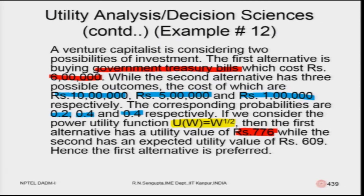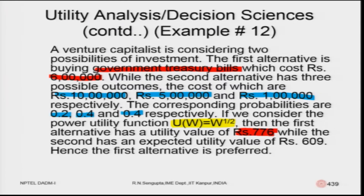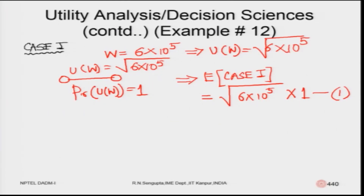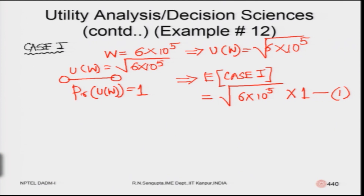Now for Case 2: the uncertain investment with outcomes 10 lakhs, 5 lakhs, and 1 lakh, with probabilities 0.2, 0.4, and 0.4 respectively.